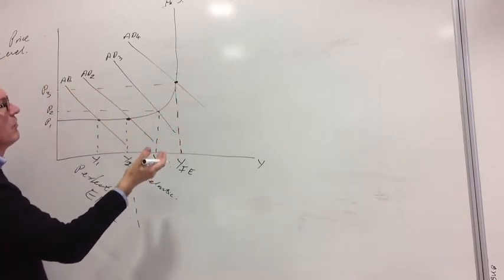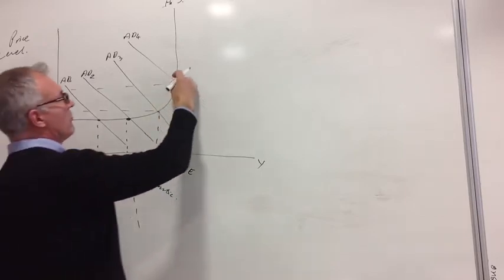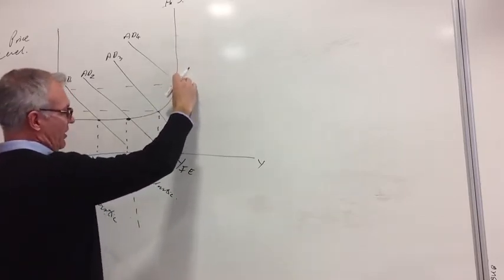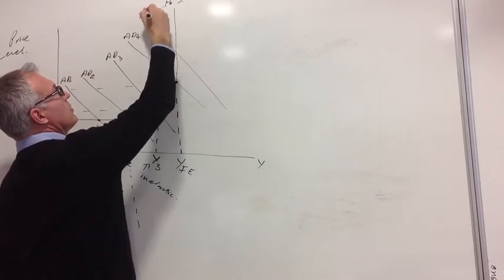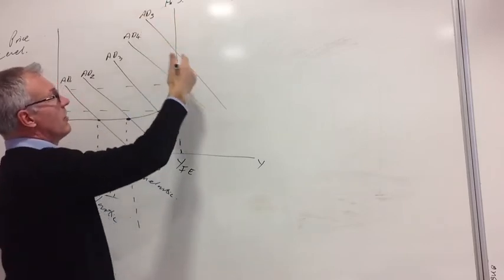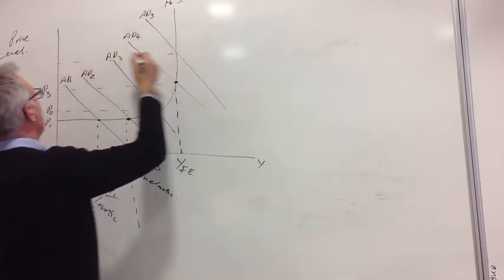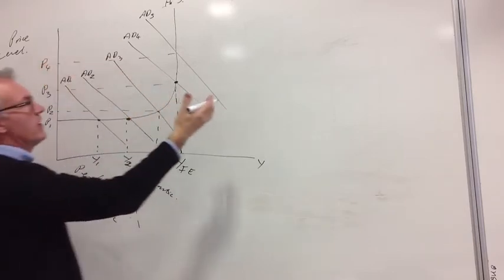And furthermore, we have this part here, which is perfectly inelastic. So if aggregate demand increases to AD5, what we're going to end up here is even more inflation.